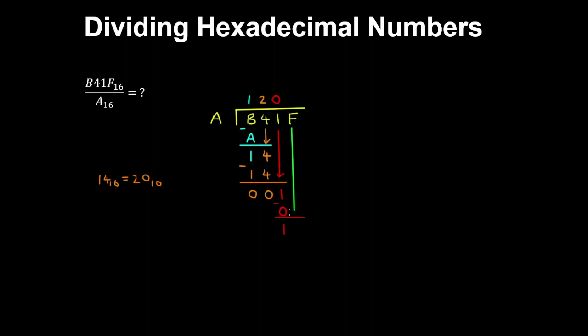And then we bring down the F. So 1F in hexadecimal is 16 plus 15, or 31 in decimal. So 10 goes into 31 three times. Times 10 is 30.